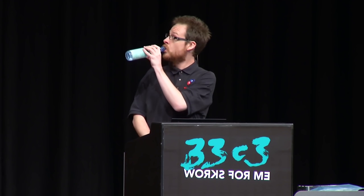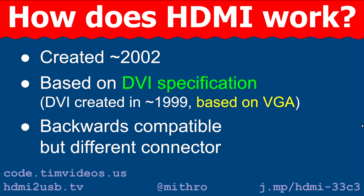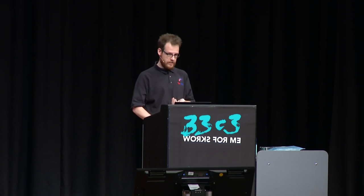So, how does HDMI work? HDMI is actually reasonably old — it was created in 2002 and is based on the DVI specification. DVI was created in 1999, so DVI is 17 years old. DVI was designed to replace VGA and shares a lot of similar history. HDMI is backwards compatible with DVI electrically and protocol-wise, but uses a different connector.